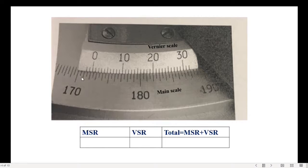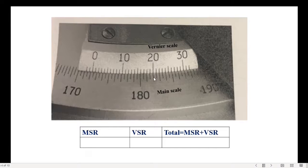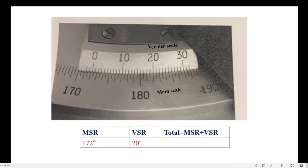For example, in this case we have 170, 170.5, 171, 171.5, 172 — it crossed 172. So the main scale reading is 172. The coincidence is where one of the vernier lines exactly coincides, and that line is 20. So the main scale reading is 172 degrees and the vernier scale reading is 20 minutes, giving a total reading of 172 degrees 20 minutes.